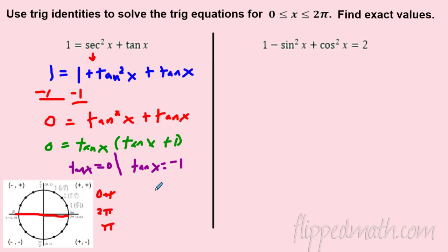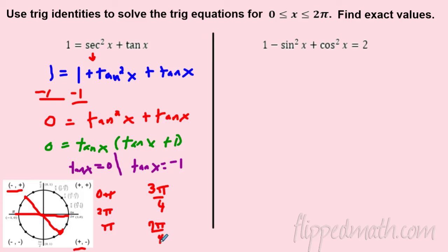For tangent x = −1, sine and cosine must be equal in magnitude but the result is negative, so we're in the second and fourth quadrants. The reference angle is π/4, giving us 3π/4 and 7π/4. So all solutions between 0 and 2π are: x = 0, 3π/4, π, 7π/4, 2π.